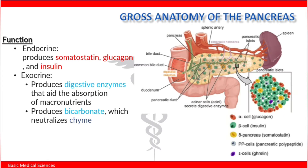The pancreas has two main functions: endocrine and exocrine. Endocrine function: this organ produces hormones like somatostatin, glucagon, and insulin. Exocrine function: this organ produces digestive enzymes that aid in absorption of macronutrients. It also produces bicarbonates which neutralize the chyme.